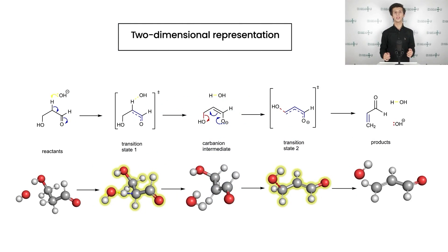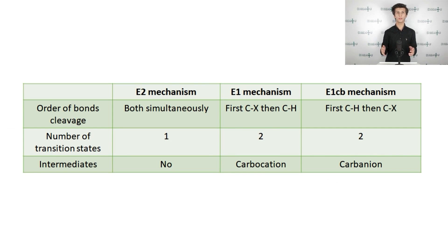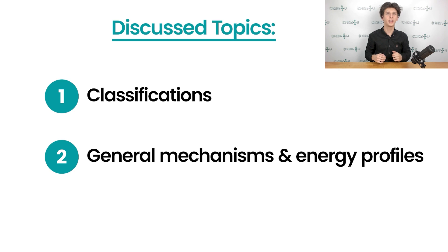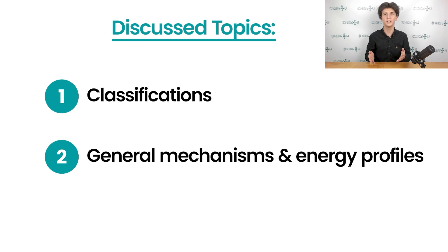The two-dimensional representation of the reaction mechanism is depicted on the slide. Ultimately, here is a brief summary of all three beta elimination mechanisms so you can explore the key differences between them. We have begun with the classification of eliminations supported by examples, then defined the elimination reaction, and proceeded with thorough discussion of the most important mechanisms differing in the timing of CX and CH bond cleavages. We evaluated the general mechanisms of E2, E1, and E1Cb, and afterwards inspected corresponding energy profiles. We also saw the 3D animations illustrating every mechanism and compared them with two-dimensional representations.